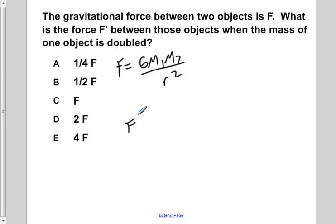Now F prime is equal to, once again, the gravitational constant, times m1, but one of the masses is doubled, so we're going to say twice m2, and it's still over r squared.